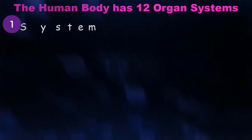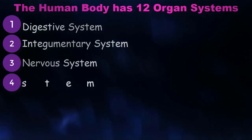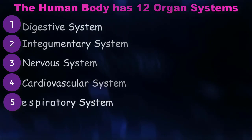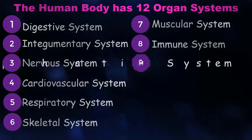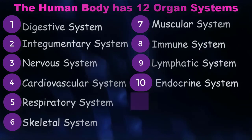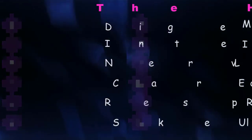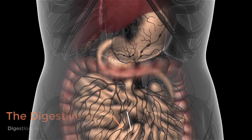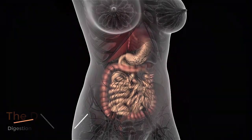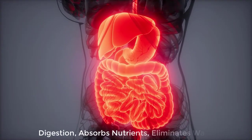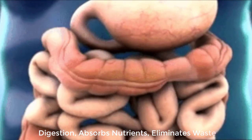These include the digestive system, the integumentary system, the nervous system, the cardiovascular system, the respiratory system, the skeletal system, the muscular system, the immune system, the lymphatic system, the endocrine system, the reproductive system, and the urinary system. The digestive system functions to absorb nutrients from the foods we eat and to eliminate indigestible waste. Ingested food must be broken down and processed to make nutrients available for the tissues, and the portion that is not digested is eliminated from the body as feces.